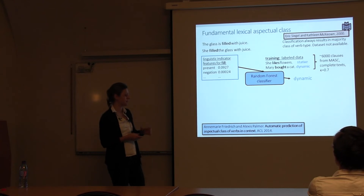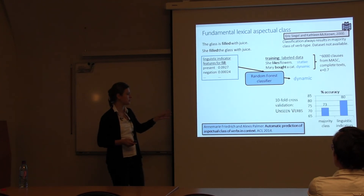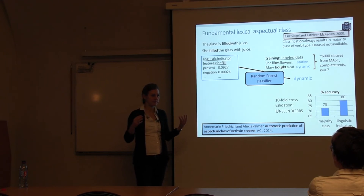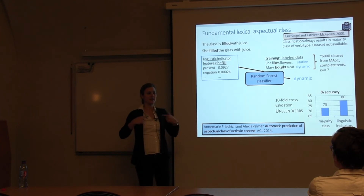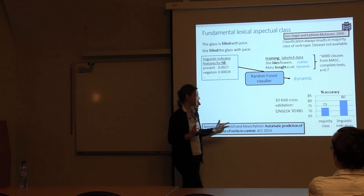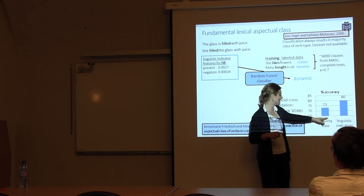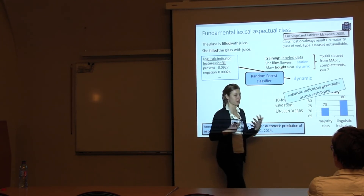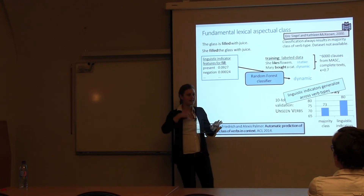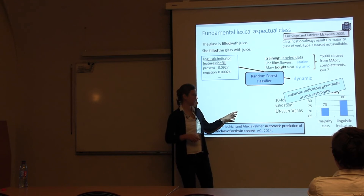For unseen verbs, the majority class baseline is 73% dynamic. Using linguistic indicator features alone, accuracy rises to 80%, which is interesting because it means the indicators generalize across verb types — even for unseen verbs, the features from similar verbs in training help predict the correct class. We then added instance-based features to distinguish cases where the same verb appears in different aspectual contexts.